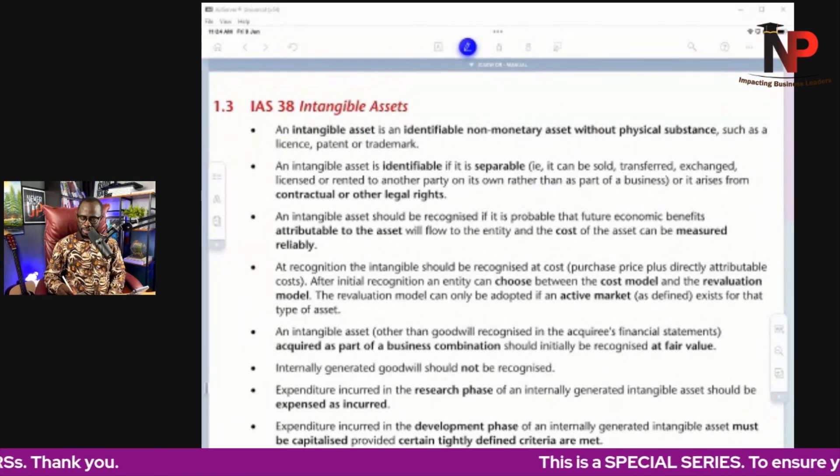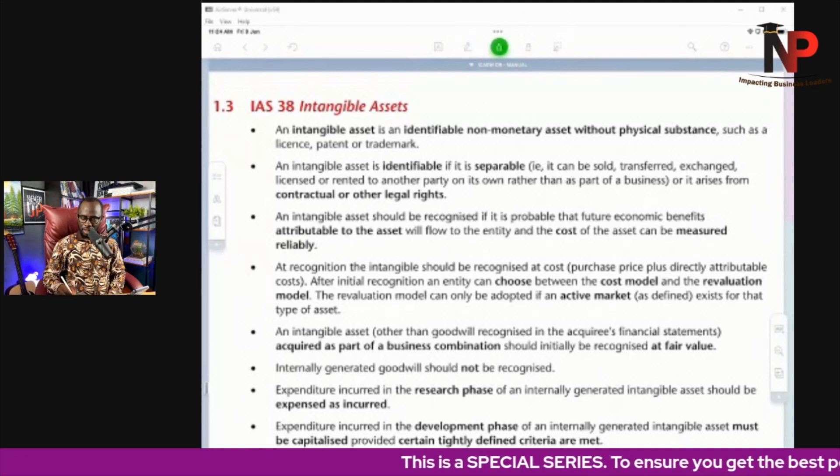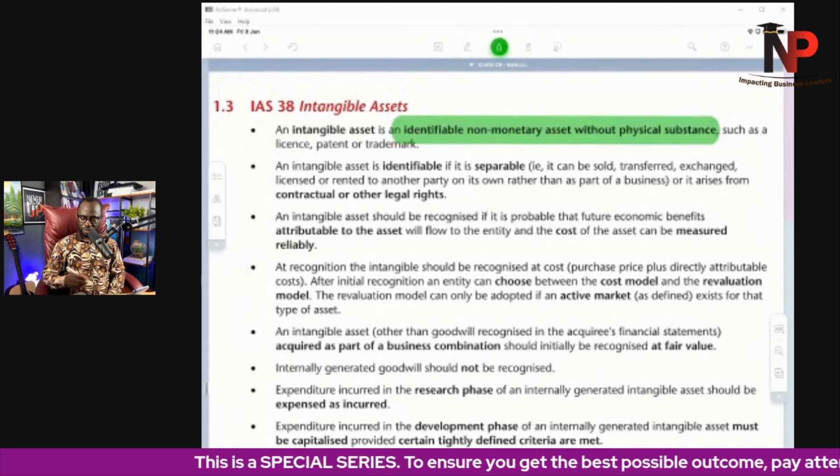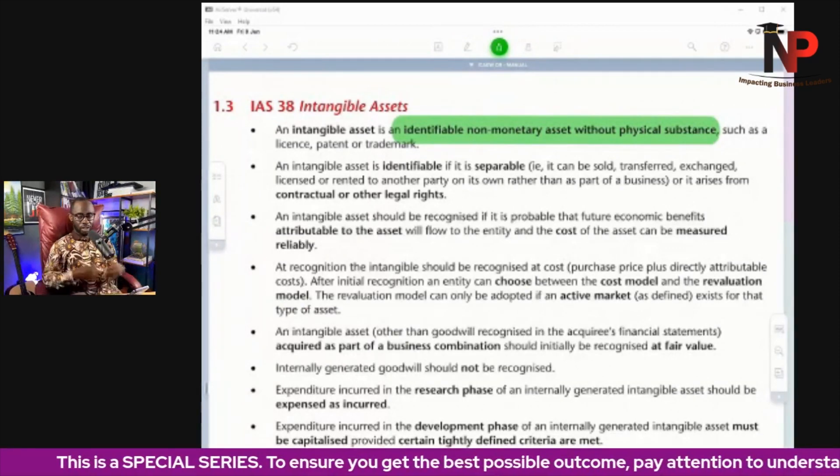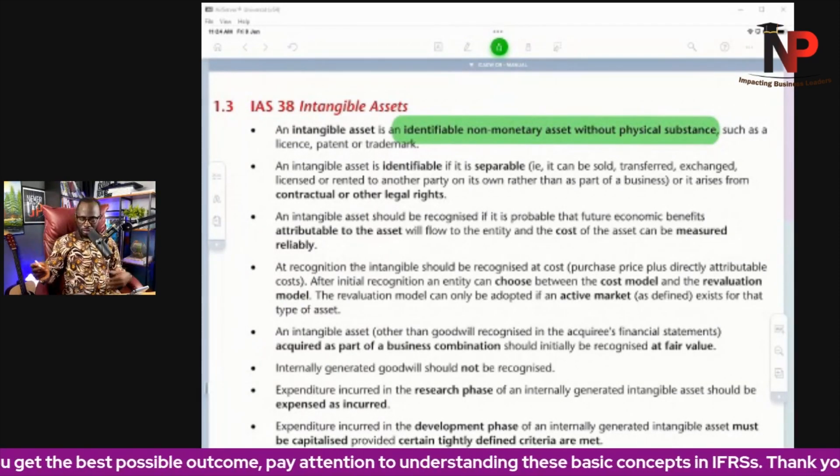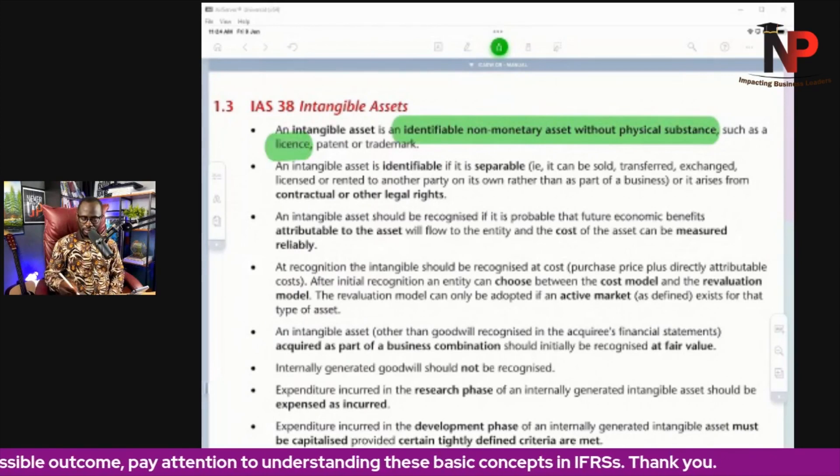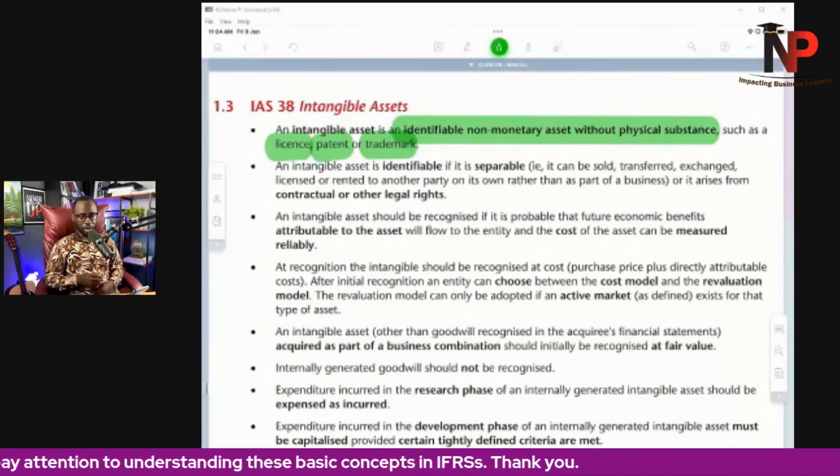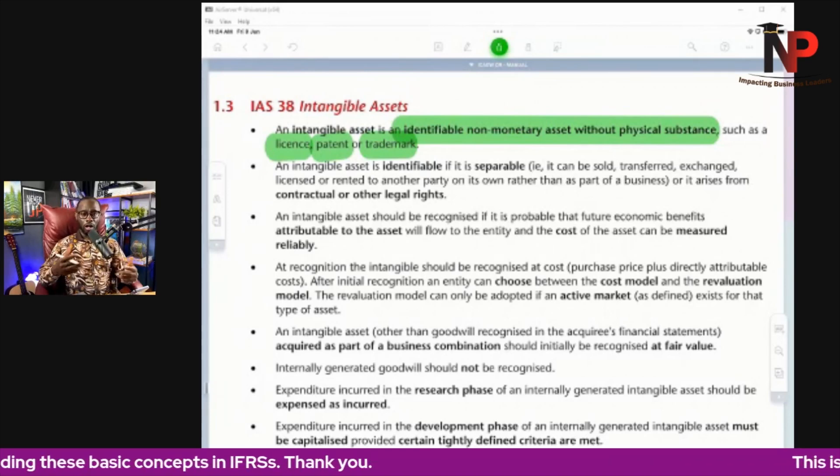So what are intangible assets? We want to take some quick definitions and build the knowledge up gradually in discussing the principles relating to IAS 38. An intangible asset is an identifiable non-monetary asset without physical substance. Examples of that are licenses, patents, trademarks, goodwill, and copyright. All these are intangible assets.